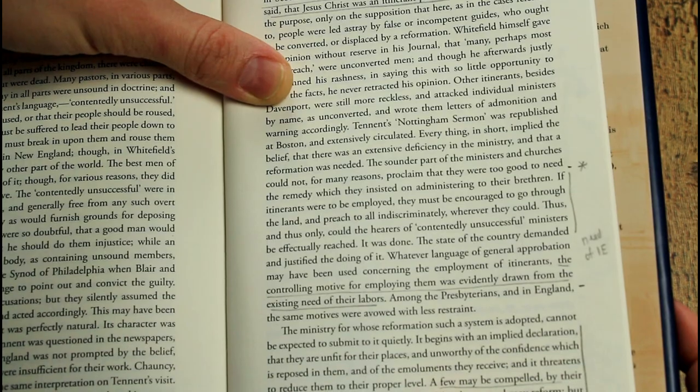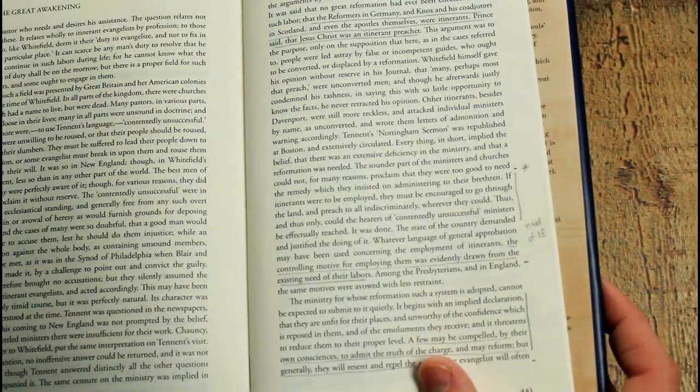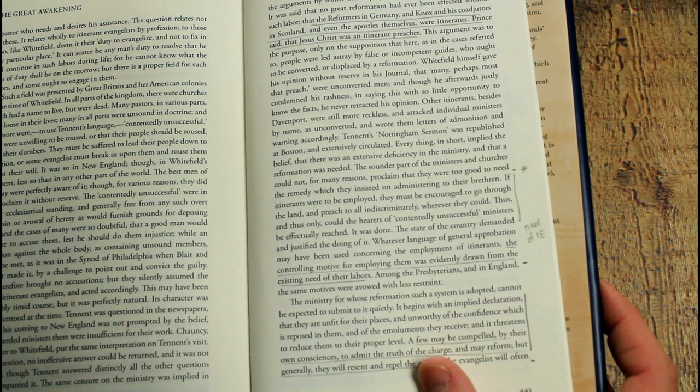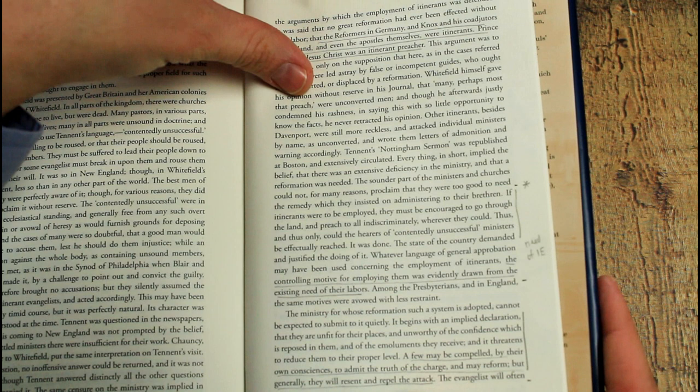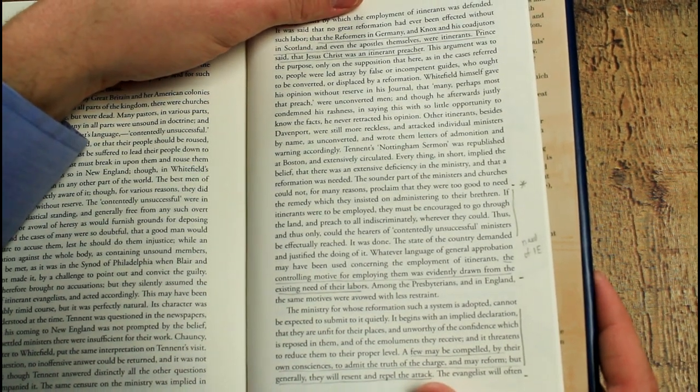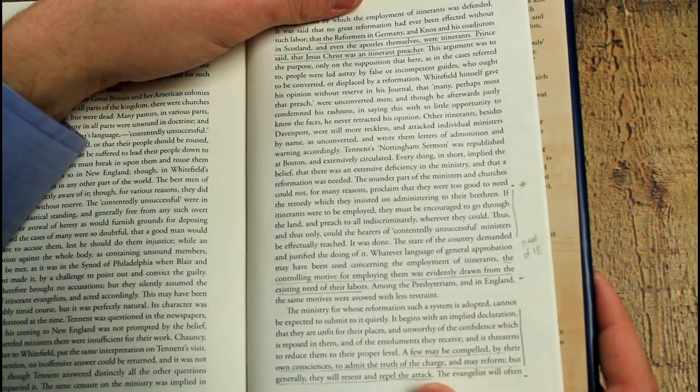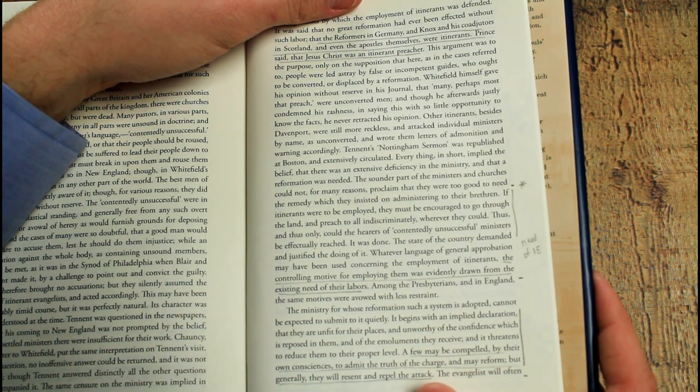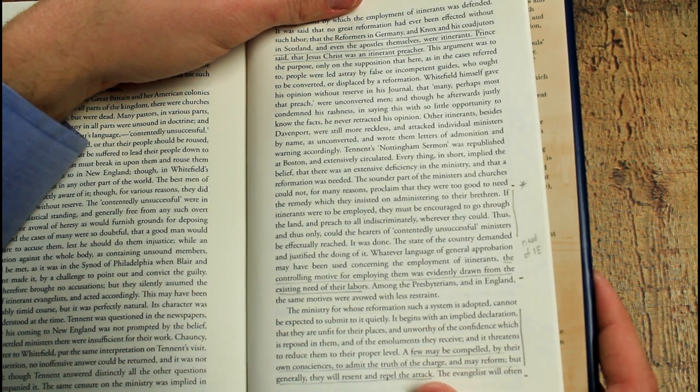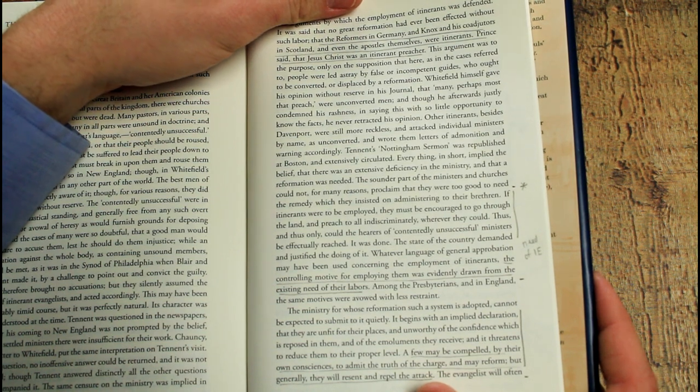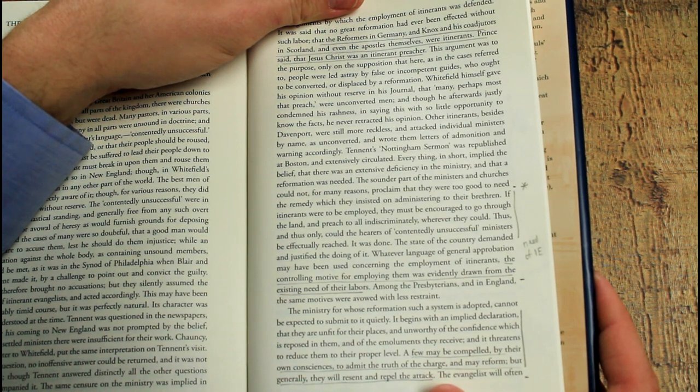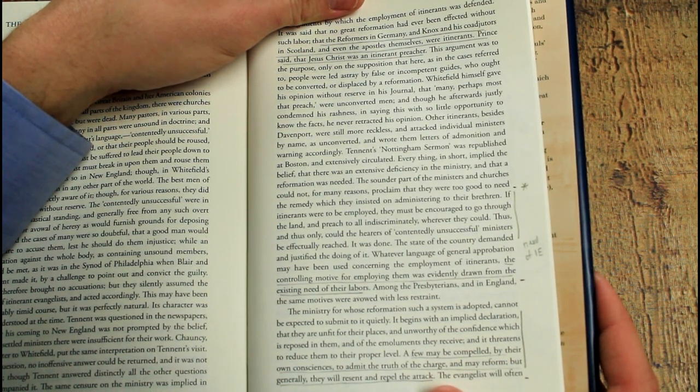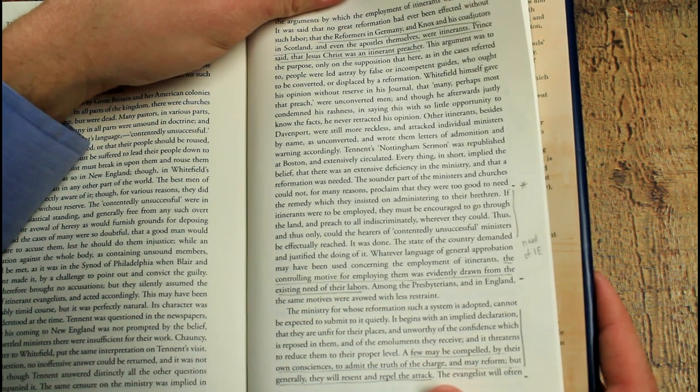He goes on to say, speaking about those churches that you would go to, some of them are not going to like what you're doing, of course. So the ministry for whose reformation such a system is adopted cannot be expected to submit to it quietly. It begins with an implied declaration that they are unfit for their places and unworthy of the confidence which is reposed in them and of the emoluments they receive, and it threatens to reduce them to their proper level. A few may be compelled by their own consciences to admit the truth of the charge and may reform, but generally they will resent and repel the attack.